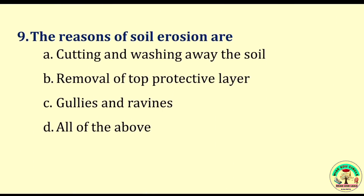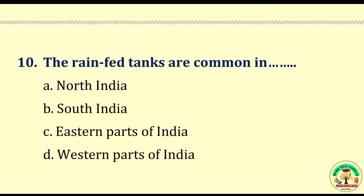Question number nine: The reasons of soil erosion are — cutting and washing away the soil, removal of top protective layer, gullies and ravines, or all of the above. The right answer is all of the above. Question number ten: The rain-fed tanks are common in — North India, South India, Eastern parts of India, or Western parts of India. The right answer is South India.